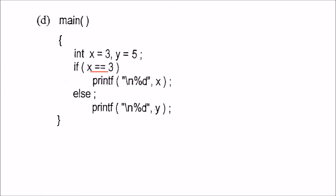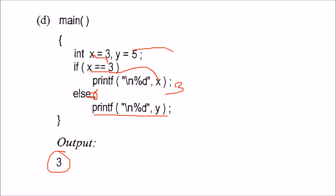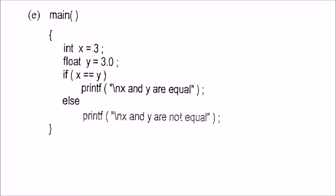x equals 3, y equals 5. x double-equals 3 means you are checking whether x is equal to 3. Yes it is, so you will print x, which is 3. In the else branch, because there is a semicolon after the if, you don't want to print anything there, so y equal to 5 will also be printed. If the semicolon weren't there, 3 would be the only output.